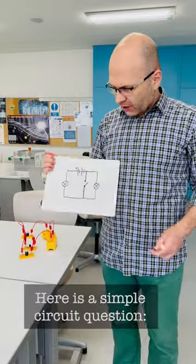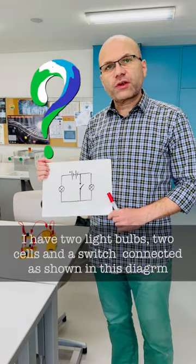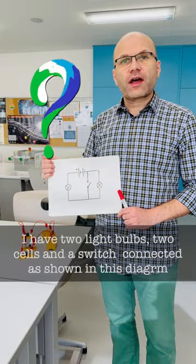Here is a simple circuit question. I have two light bulbs, two cells and a switch connected as shown in this diagram.